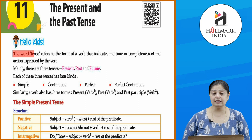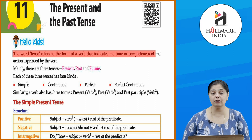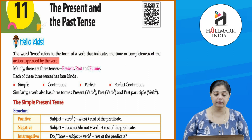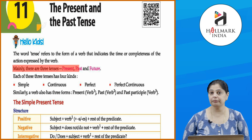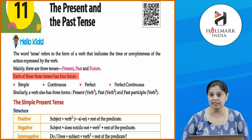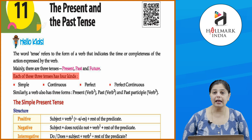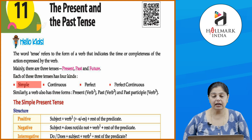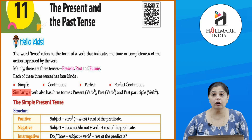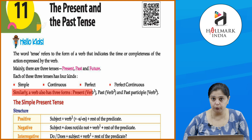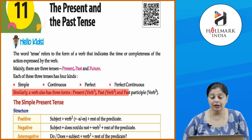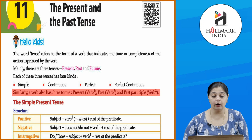The word tense refers to the form of a verb that indicates the time or completeness of the action expressed by the verb. Mainly there are three tenses: present, past, and future. Each of these three tenses has four kinds. These different types of tenses are simple, continuous, perfect, and perfect continuous. Similarly, a verb also has three forms: verb one (present), verb two (past), and verb three (past participle).